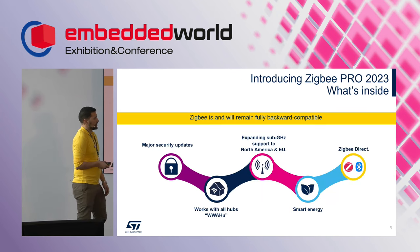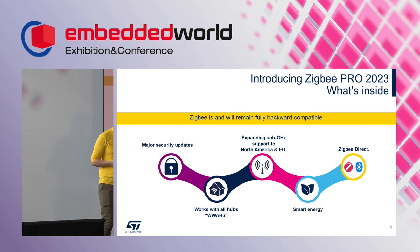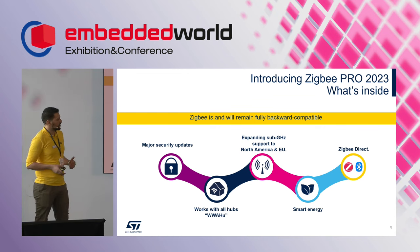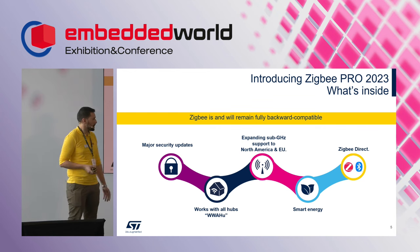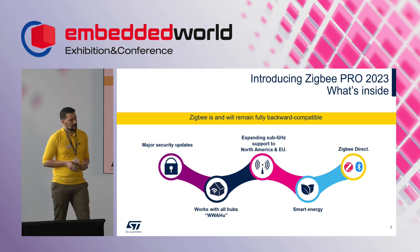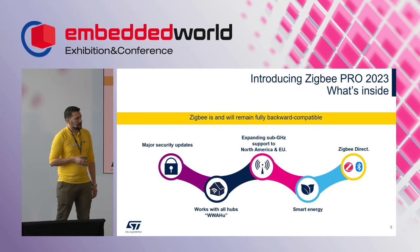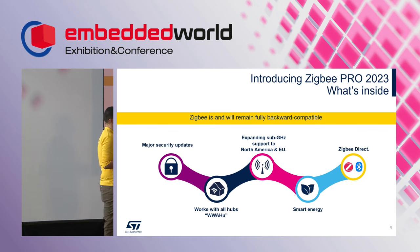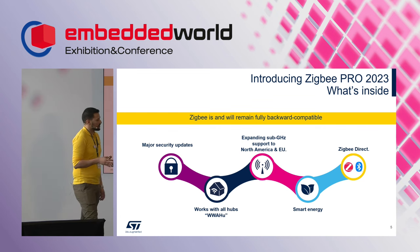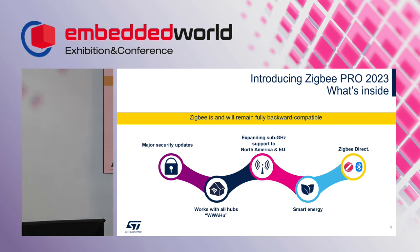I'd like to introduce Zigbee Pro 2023. So what's inside? With this new release, we have some major security updates — security is a topic that is continuously evolving, and Zigbee continuously provides updates to address modern threats. We have a new feature called 'Works with All Hubs' to standardize Zigbee device implementation with hubs, expansion of sub-Gigahertz support to North America and Europe, Smart Energy linked updates, key management improvements, and the new Zigbee Direct feature that combines Bluetooth Low Energy with Zigbee to enhance user experience.